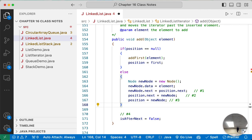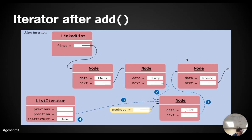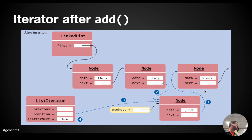Can we call add twice? Yes, we can. So if we were to call add again at that point, the new node would be inserted between Juliet and Romeo, and our iterator has all the right references to make that work. We have no idea what previous is at that point — we've kind of left that — but that's okay because we only care about previous when we're removing.